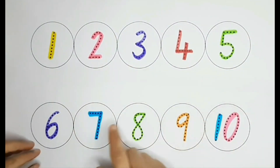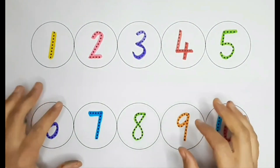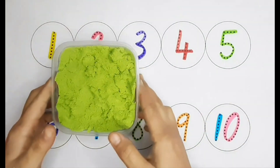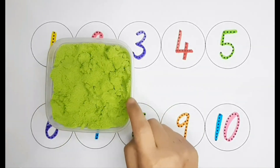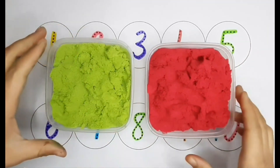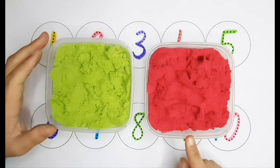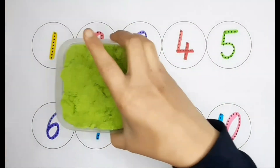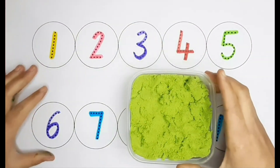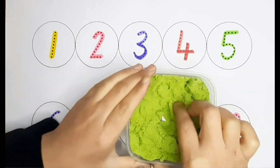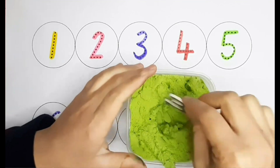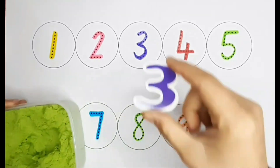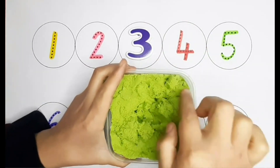Let's practice numbers in this activity. I need your help to find it in sand, so I can match them with numbers in the board. We have green scents with 5 numbers in them, and red scents with 5 numbers in them. Let's begin. Which number do you think it's hiding in sand? It's number 3. Can you help me to find number 3 in the board? Yes, here it is.